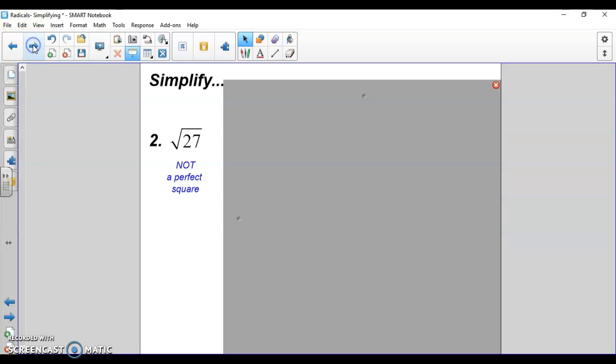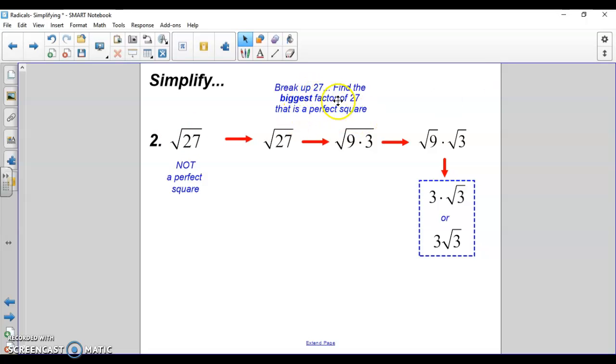Square root of 27, same deal. We need to find the biggest factor of 27 that's a perfect square. We got 9. 9 times 3. Break it up: square root of 9 times square root of 3. Square root of 9 is 3. Square root of 3, we can't do anything with. So 3 radical 3 is your answer.